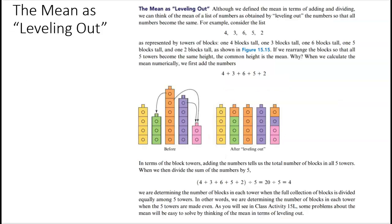What you saw in our last exploration was leveling out the mean. Although we define the mean in terms of adding and dividing, we can think of it as a list of numbers obtained by leveling out the numbers so that all the numbers become the same. For example, consider this list: 4, 3, 6, 5, and 2. Now let's represent it with blocks: 4, 3, 6, 5, and 2. Now, if we arrange the blocks so that all five towers become the same height, the common height is the mean.